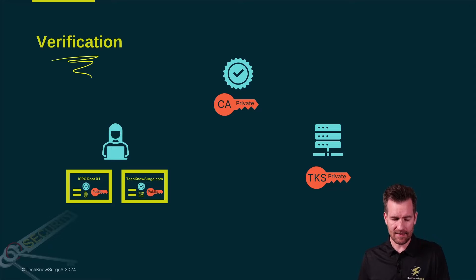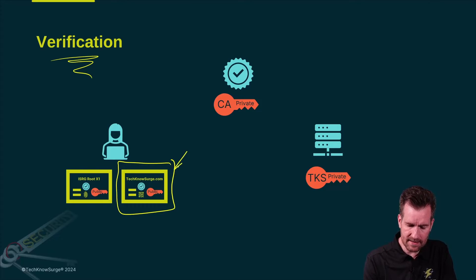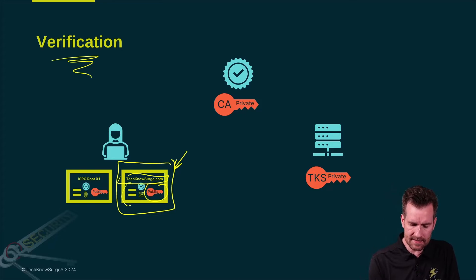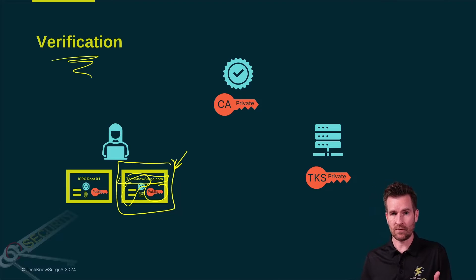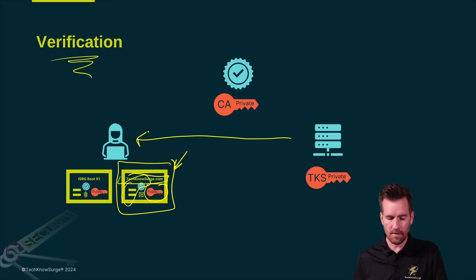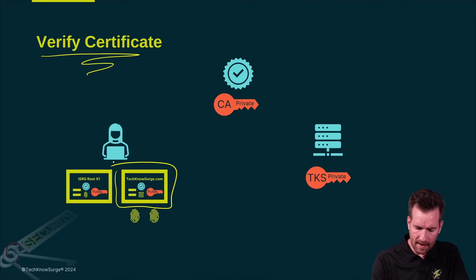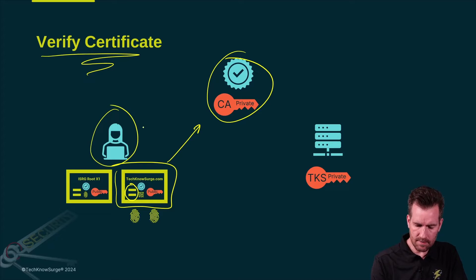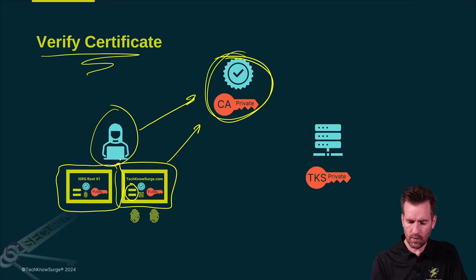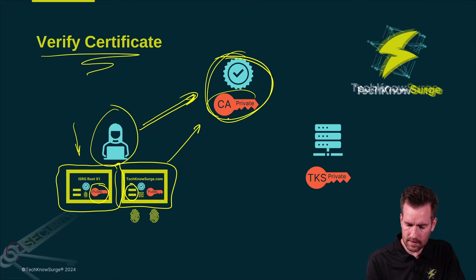First, we need to verify the digital certificate to make sure it's authentic — that this is the website, this is the public key associated with that website, and this is all of the information associated with that digital certificate. Second, we want to verify that the data that comes to us is authentic. Within the certificate there's information about what the certificate authority is. This machine already trusts that certificate authority — in fact, it already has the certificate associated with that certificate authority on that machine, and within it is the public key associated with the private key from that certificate authority.